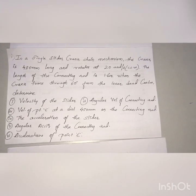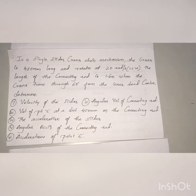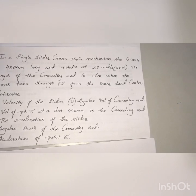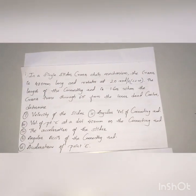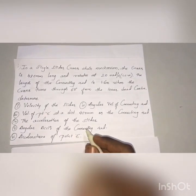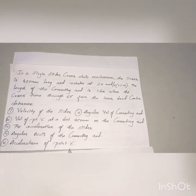In this video, I am going to explain how to solve velocity and acceleration problems using the graphical method. Here is the first problem based on the slider crank mechanism. There is a slider crank mechanism with the crank 480 mm long, rotating at 20 radians per second in a counterclockwise direction. The length of the connecting rod is 1.6 meters. When the crank turns through 60 degrees from inner dead center, determine: the velocity of the slider, angular velocity of the connecting rod, velocity of point E at 450 mm on the connecting rod, acceleration of the slider, angular acceleration of the connecting rod, and acceleration of point E.